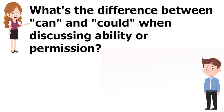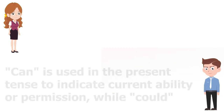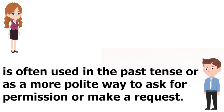What's the difference between "can" and "could" when discussing ability or permission? "Can" is used in the present tense to indicate current ability or permission, while "could" is often used in the past tense or as a more polite way to ask for permission or make a request.